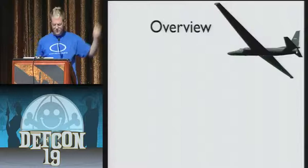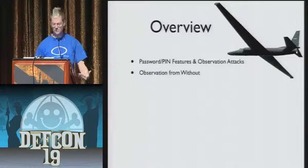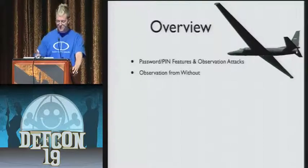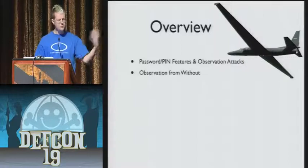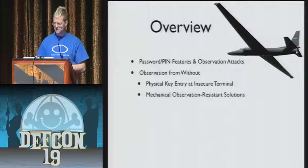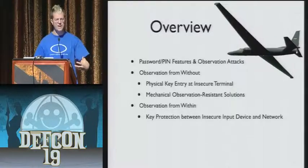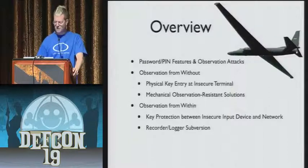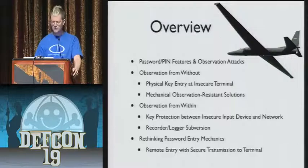Here's an overview of the whole hour-long talk. First, some key features of password and PIN authentication and the nature of the observation threat. Then three categories of threat and response — our concern here is primarily interface design. Not the idea that we can make this perfectly secure, but how we design interfaces that mitigate these threats in an environment where we can't completely control what's going on. First: being observed from outside — physical key entry at an insecure terminal and some mechanical and electromechanical observation-resistant solutions. Second: observation from within a compromised terminal, protecting your key between the input device, the network, and the bank. Third: rethinking how we enter passwords — remote entry and secure transmission to the terminal using digital tools that everyone now carries.